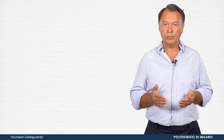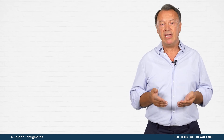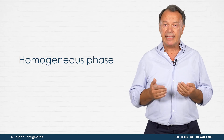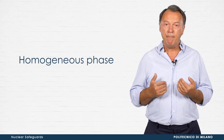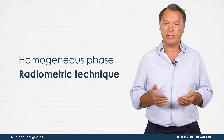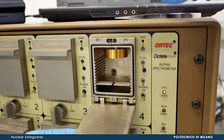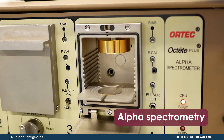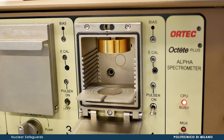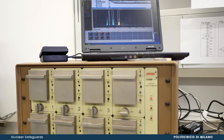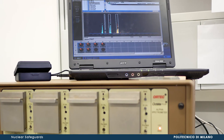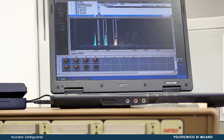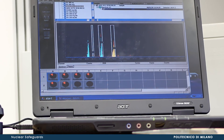Once the target radionuclide has been separated and is available in a homogeneous phase, the counting source has to be properly prepared to be measured by the most suitable radiometric technique. If the target radionuclide is an alpha emitter, the radiometric technique of choice is alpha spectrometry. The sample solution undergoes an electro-deposition process that produces a thin coherent coating on a stainless steel planchette, so that alpha particles are not self-absorbed and can be detected by a semiconductor detector under vacuum conditions.